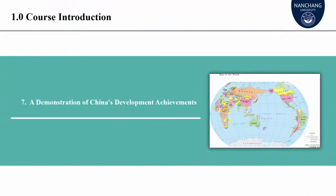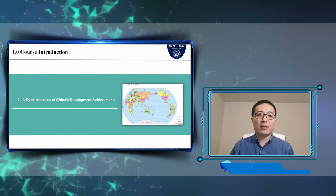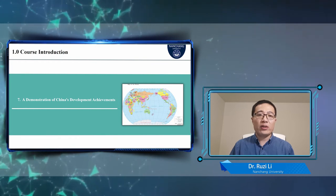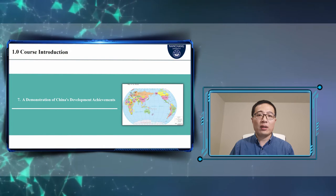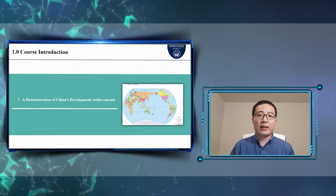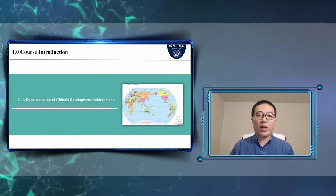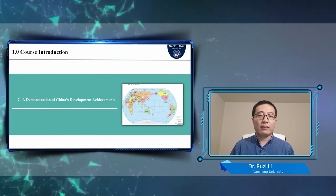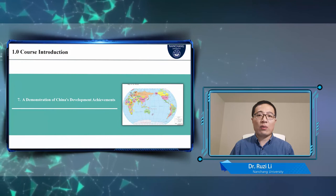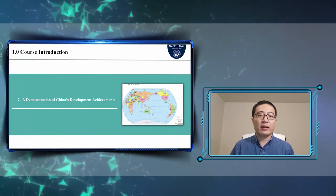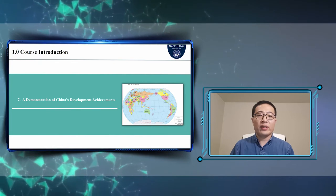The last part is a demonstration of China's development achievements. China's economic and social development achievements will reflect the guiding role of New Structural Regional Economics in regional development strategies. For example, the targeted poverty alleviation strategy, the Yangtze River Economic Belt, and so on. This will further facilitate our understanding of China's strategy of developing the regional economy based on its own resource endowment structure.